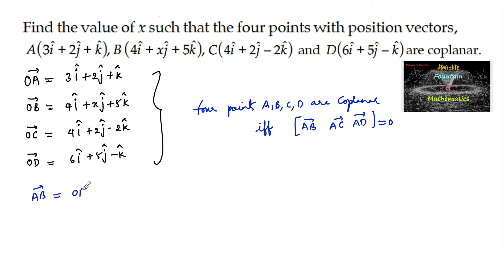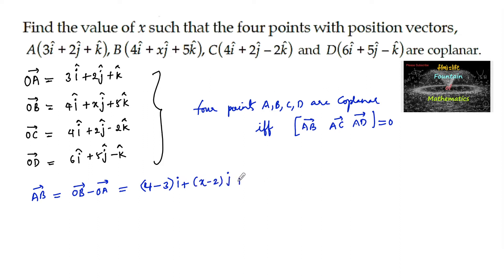Let us consider vector AB = OB - OA, which is equal to (4-3)i + (x-2)j + (5-1)k, so AB = i + (x-2)j + 4k.